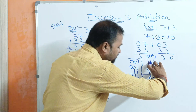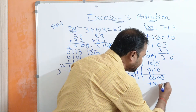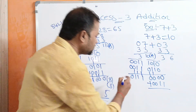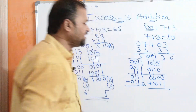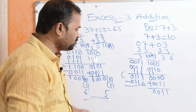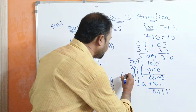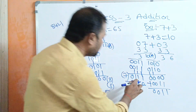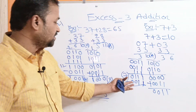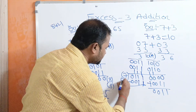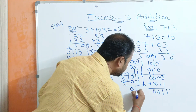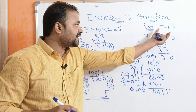Observing the first group, we got a carry by adding the most significant bits, so we add 3 to it: 0 plus 1 is 1, giving 1100. For the second group, we did not get any carry by adding the most significant bits, so we subtract 3. 0111 in decimal is 7, and 0011 is 3, so 7 minus 3 is 4. 4 in binary notation is 0100.